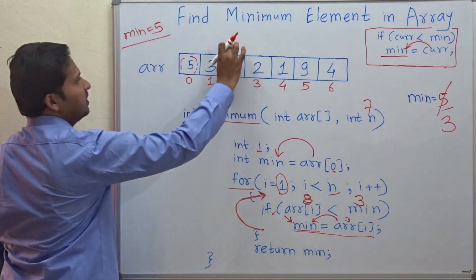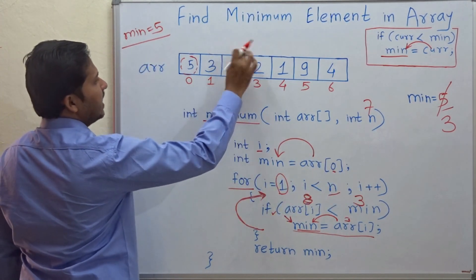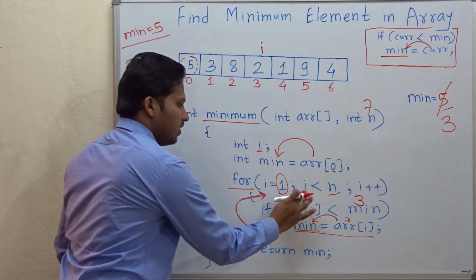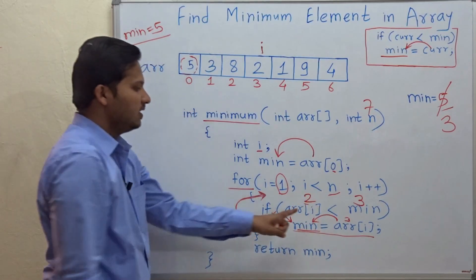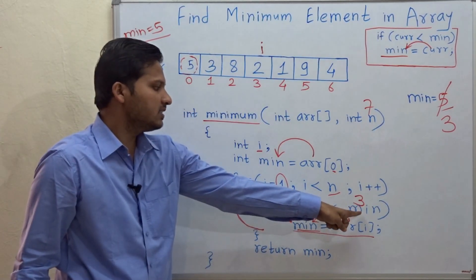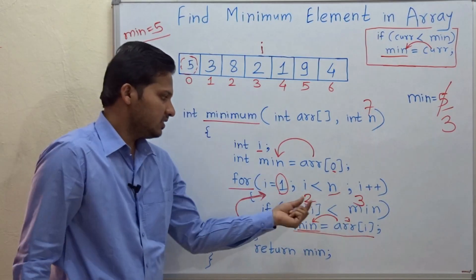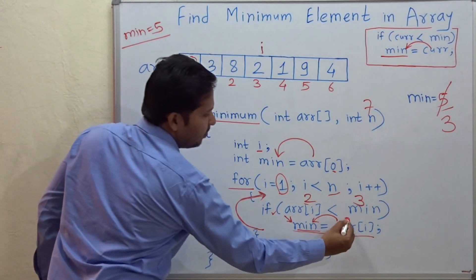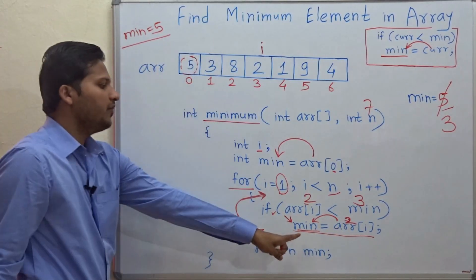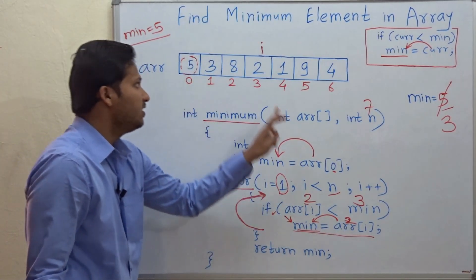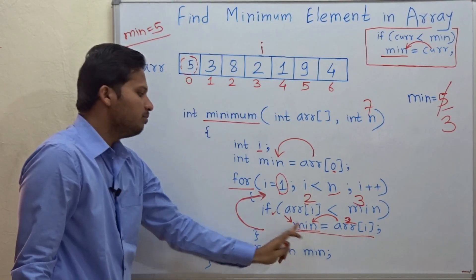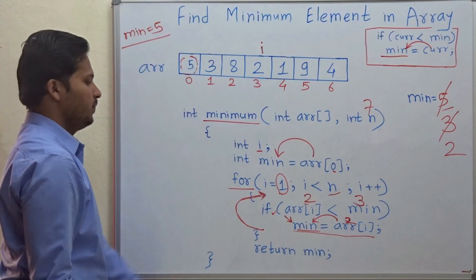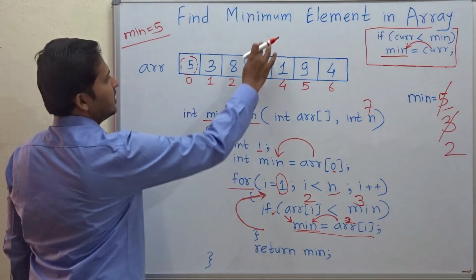i++ means we go to the next element. Check: whether 2 — that is array of i — is less than 3, that is the minimum. Yes, 2 is less than 3. So 2 will be assigned to the minimum variable, meaning the current element 2 will become the minimum element. This variable is updated to 2 and we go to the next iteration.